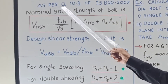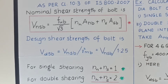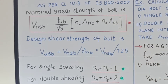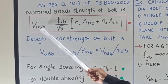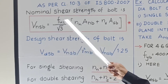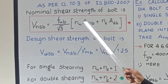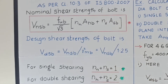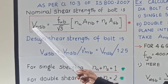As per clause number 10.3 of IS 800-2007, the nominal shear strength of bolt is given by: V_nsb (V for nominal, s for shear, b for bolt) is equal to f_ub divided by root 3, multiplied by the bracket (n_n into A_nb plus n_s into A_sb). Let us see what the different terms in this formula mean.